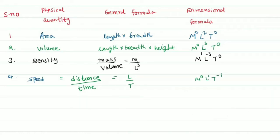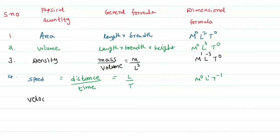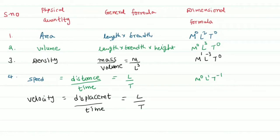Velocity is a vector quantity. Velocity equals displacement by time. Displacement is the shortest distance and is also a kind of length. So the dimensional formula for velocity is M power 0, L power 1, T power minus 1.